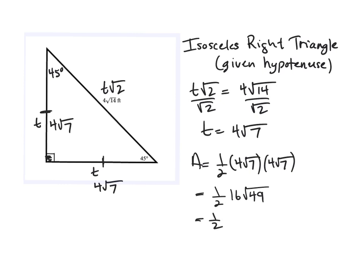So this is 1 half times 16 times 7. 1 half times 16 is 8. 8 times 7 is 56.